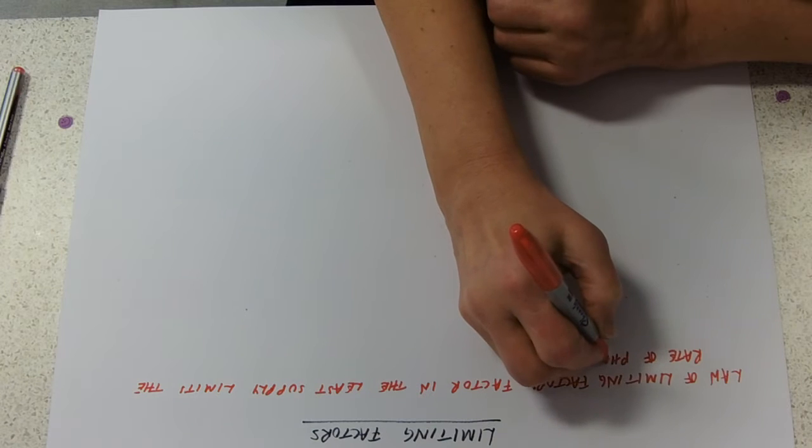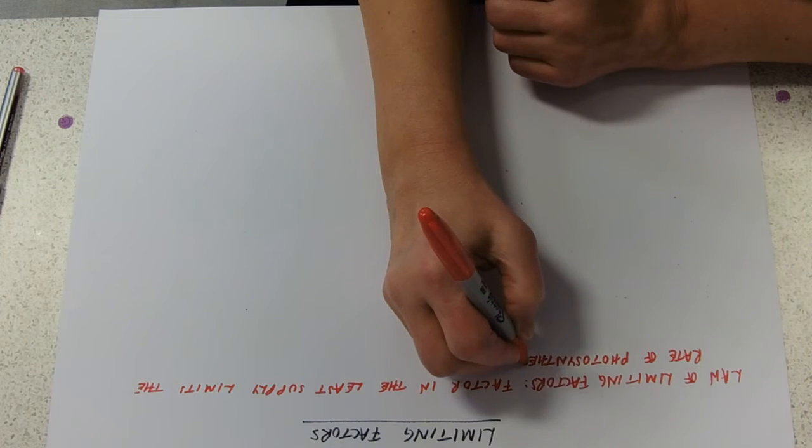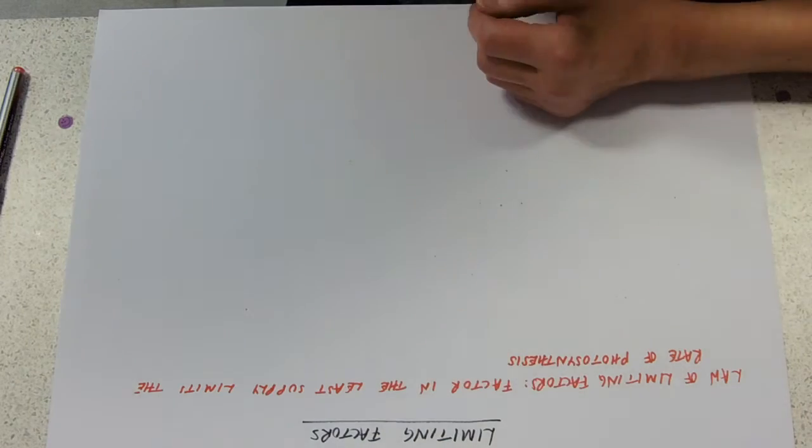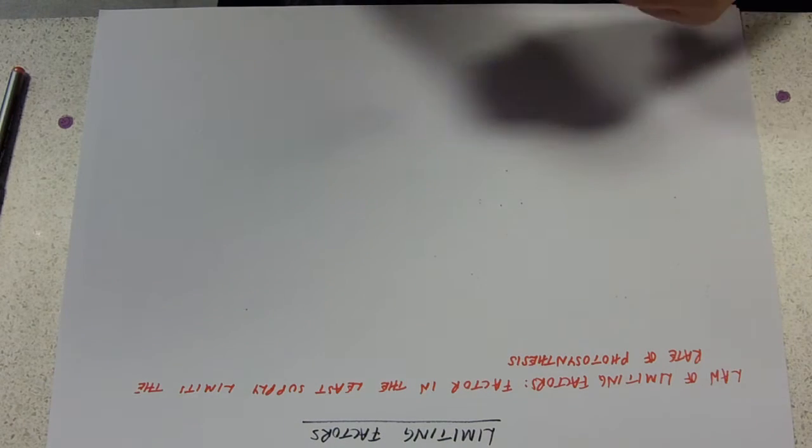Which as a statement doesn't really seem to make a huge amount of sense, and that's why we're going to look at some lovely graphs. So, factors that affect the rate of photosynthesis.